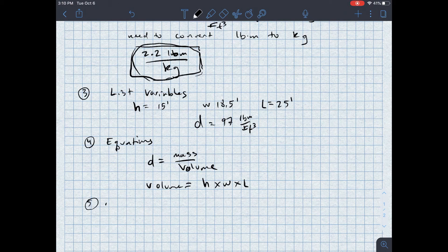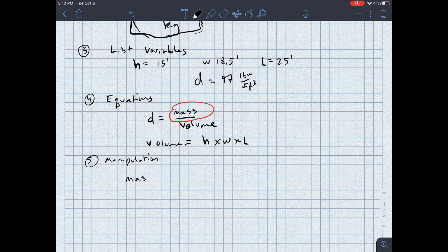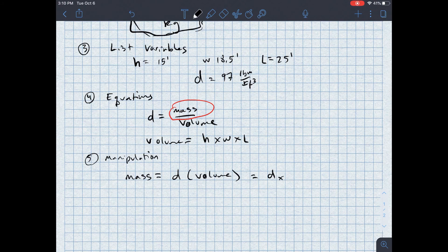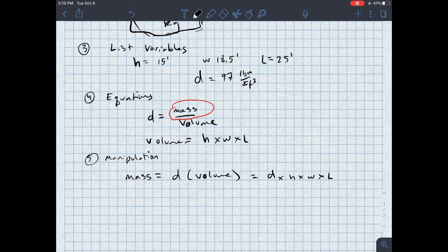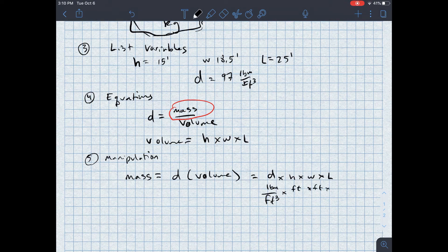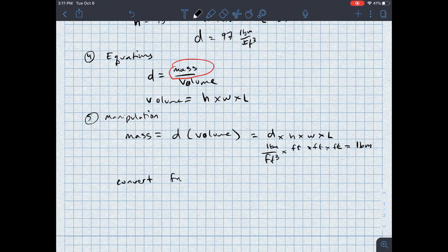Finally, I get to the last step, which is manipulation. So I want to find mass. Let's sort of highlight that here. This is mass. That's what I want. And so I know that to find mass, it's equal to the density times the volume. And I have an equation for volume. So this is equal to the density times the height times the width times the length. Now, there is one problem with plugging in the variables I have. I've got pounds mass per feet cubed times feet times feet times feet. And so the result here is going to be in pounds mass. So the very last thing I'm going to need to do is convert from pounds mass to kilograms.